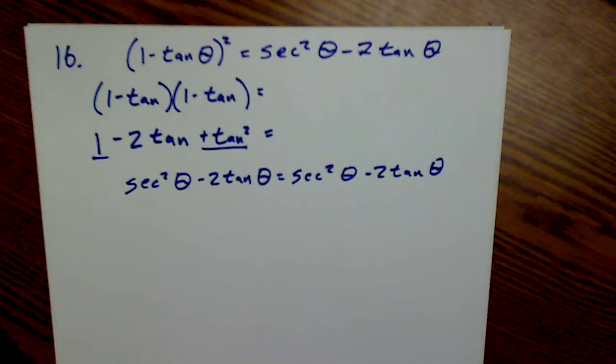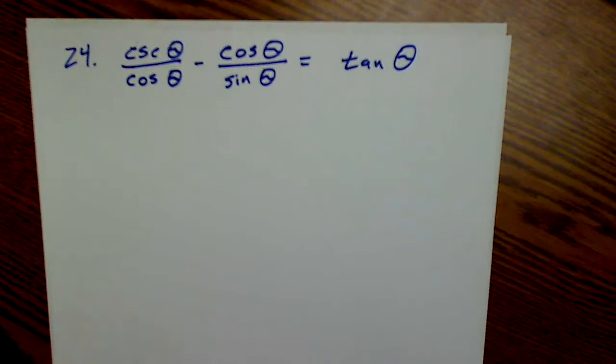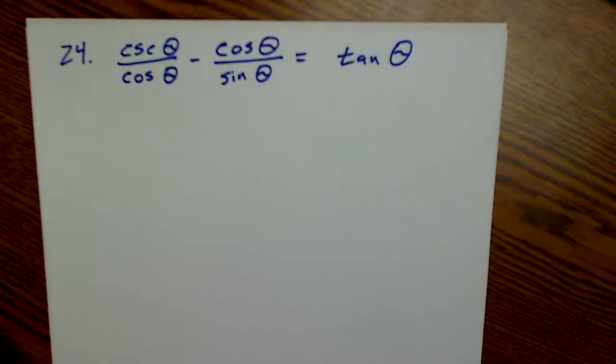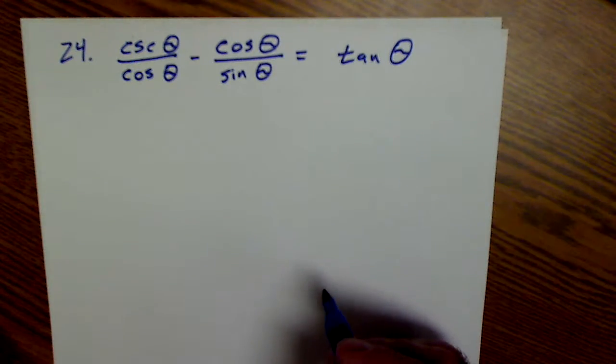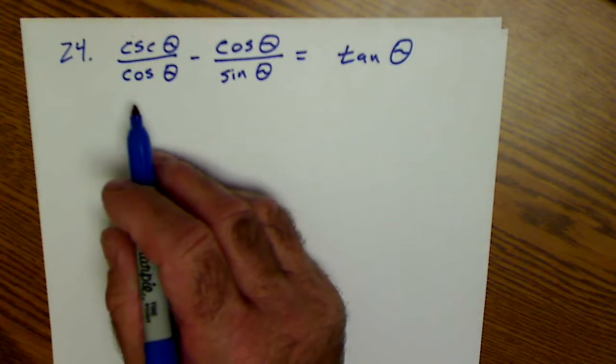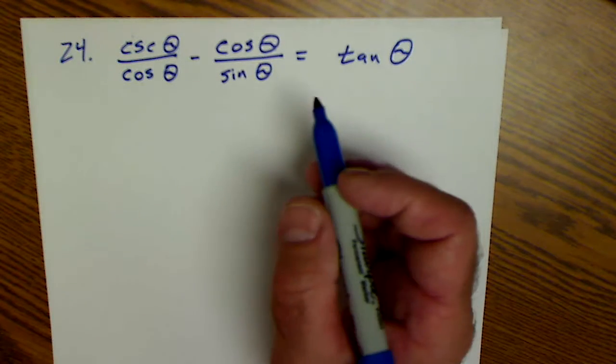Let's do one last one right here. It really helps a lot to have the identities right in front of you so you have something to refer to them with. So here, left side is much more complex than right.